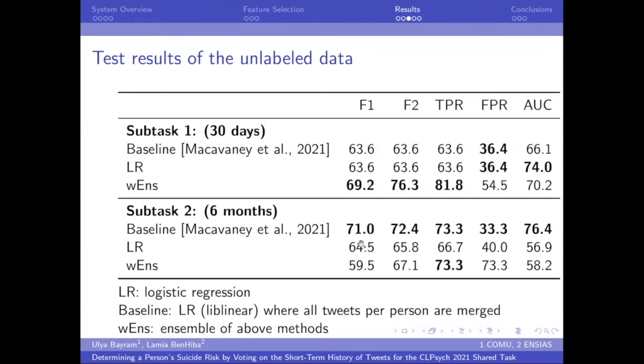And we see the effects here. We see that our approaches, our logistic regression is much better than their logistic regression because we applied a voting mechanism on the 30 days dataset. Meanwhile, our ensemble is also good, but logistic regression is better in terms of AUC, but other scores are higher on the ensemble.